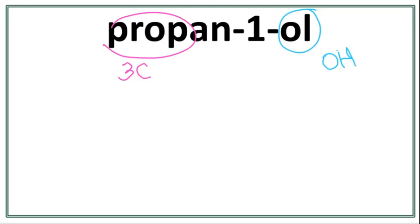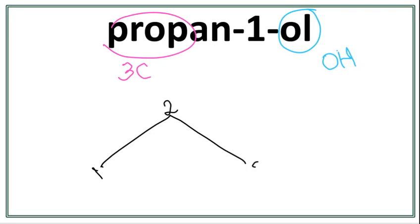So let's draw the three carbons. A trick to draw the longest carbon chain is that you always count till one less than the number of carbons you want to draw. So: one, two. Let's number these carbons: one, two, and three.